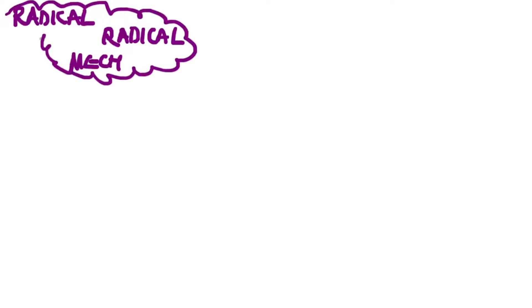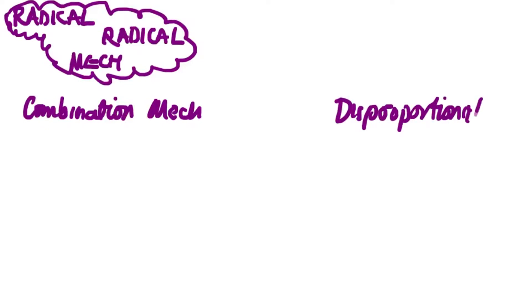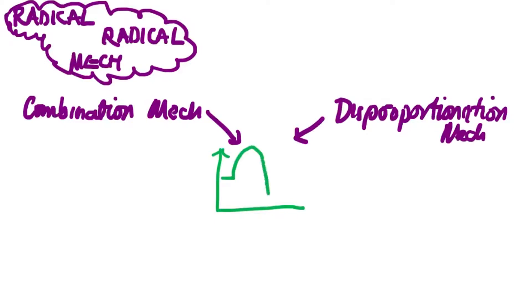We'll look at how two radicals can overlap in terms of bonds and result in stable products, and various competitive reactions within the mechanisms. The first mechanism we're going to look at is the combination mechanism, and we're going to compare that with the disproportionation mechanism.